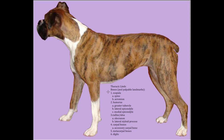Hi everybody. Today we're going to functionally draw the bones and palpable landmarks of the thoracic limb. By functional I mean you'll use this in the future for thinking about the function of muscles on these levers, so it's important that we draw them correctly.